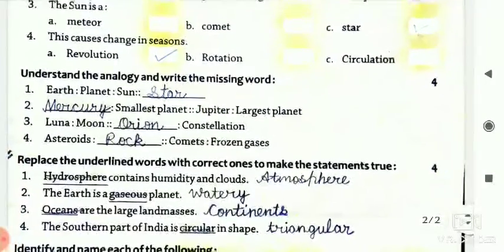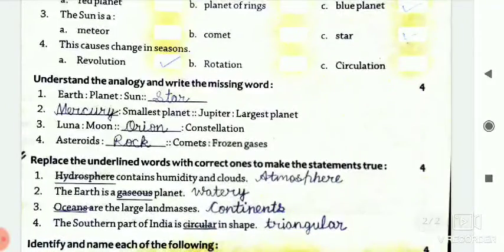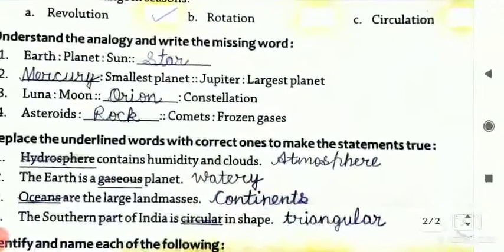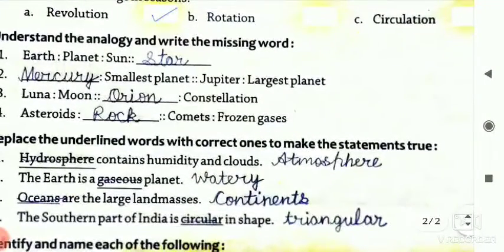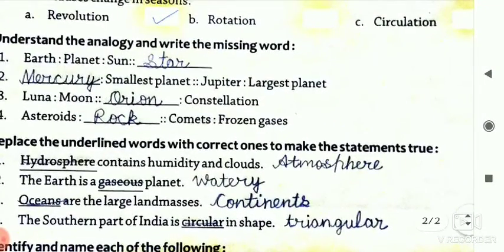Now look at question number three. Understand the analogy and write the missing word. First one is, Earth: planet. Earth is a planet, so sun is a star. Next, smallest planet. So what is your smallest planet? Mercury. And Jupiter is your largest planet.